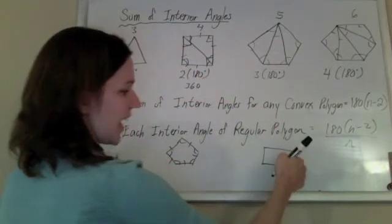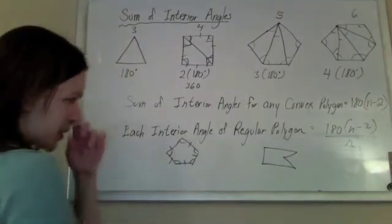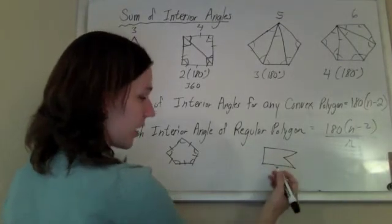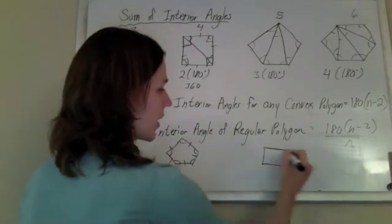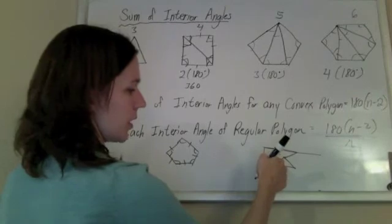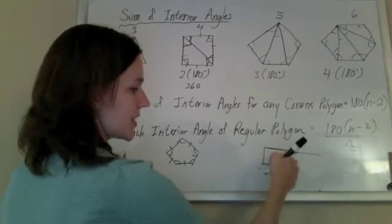Concave polygons have little caves in them. Something like that would be concave. The way you can tell if you're unsure - if you draw any line, you shouldn't cross through the middle. So this is bad.